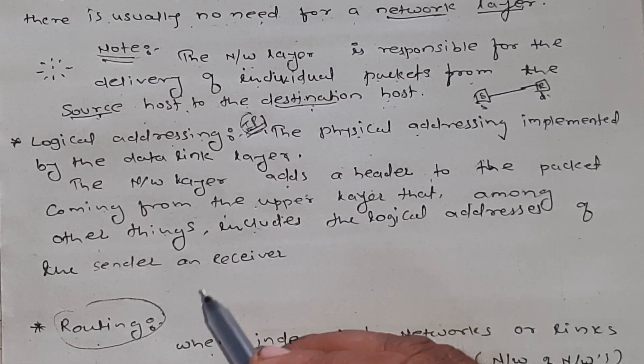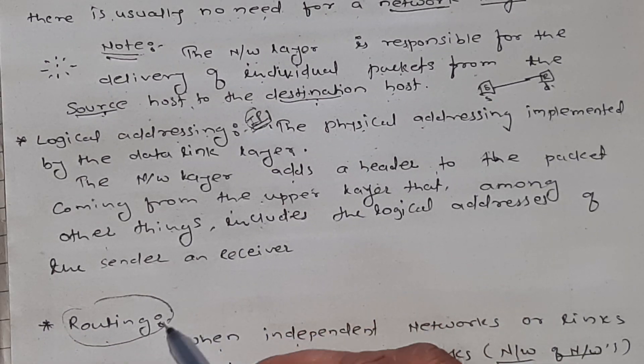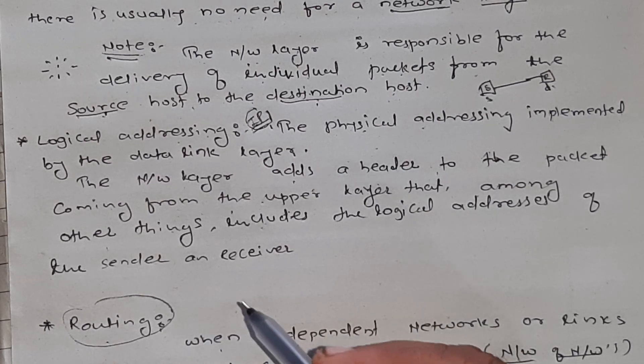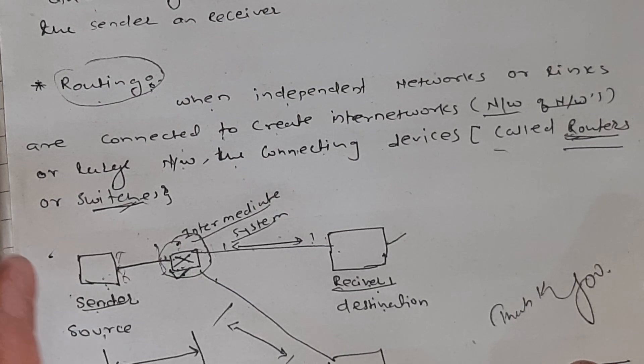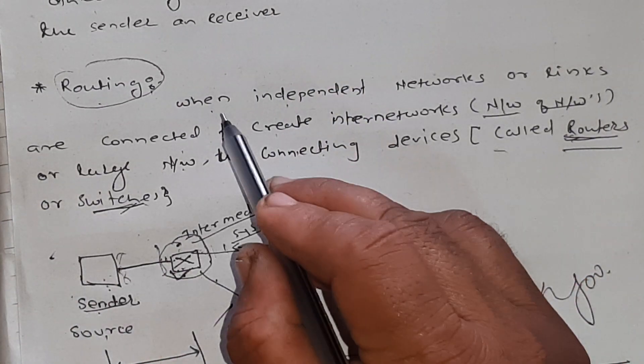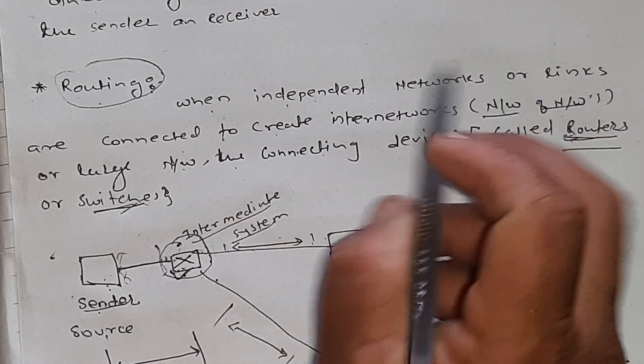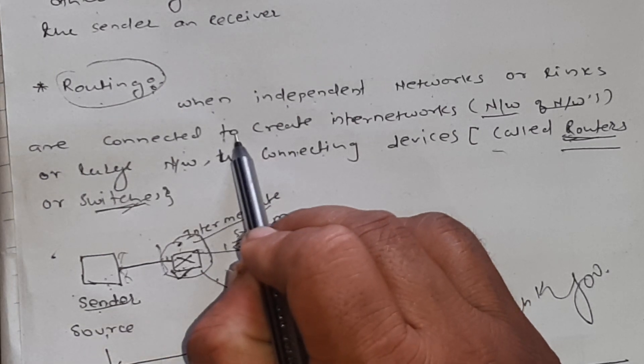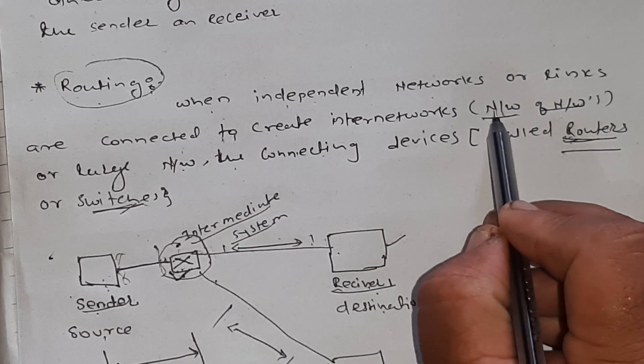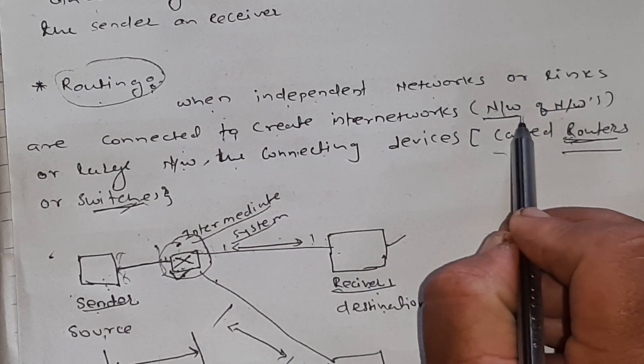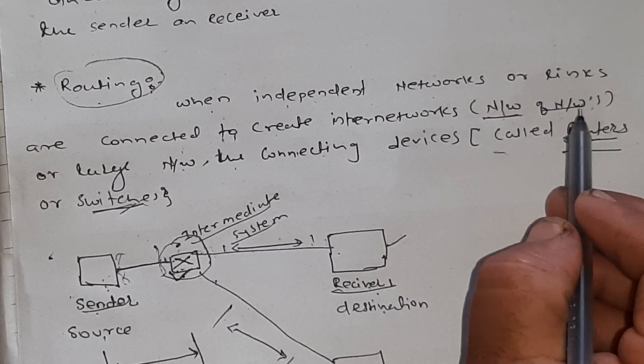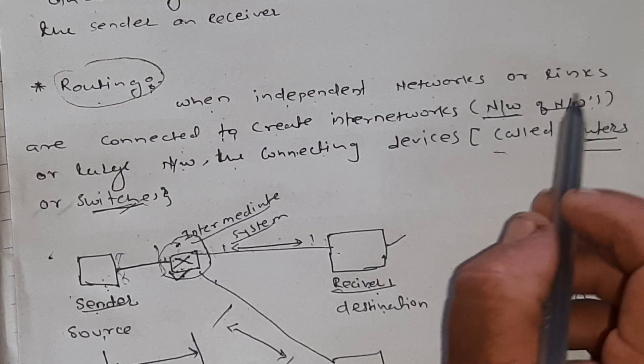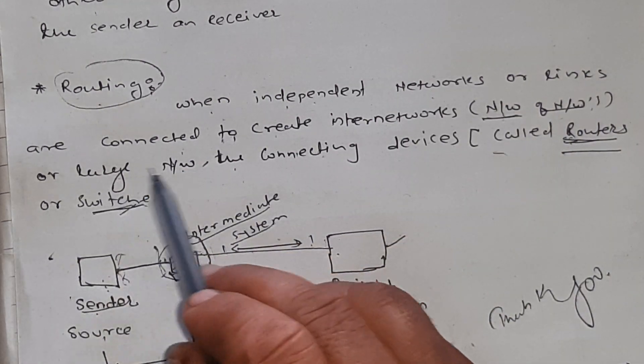The network layer is the basis for routing. So, routing is nothing but the traveling of our data from one device to another. When independent networks or links are connected to create internetworks, internetworks is nothing but network of networks, for example internet or any WAN wide area network and large network.